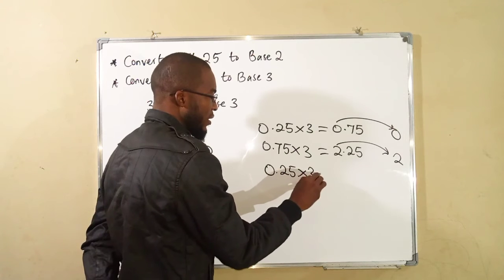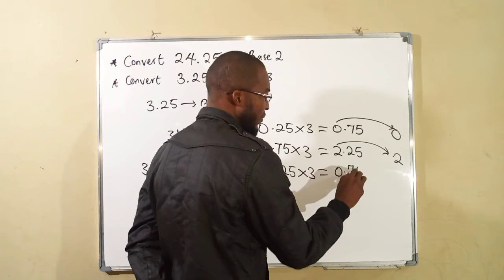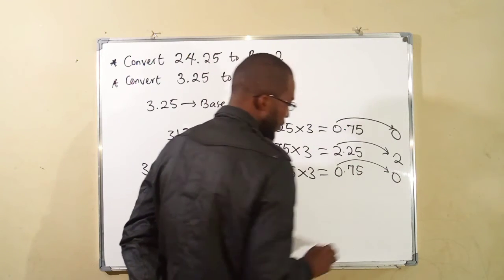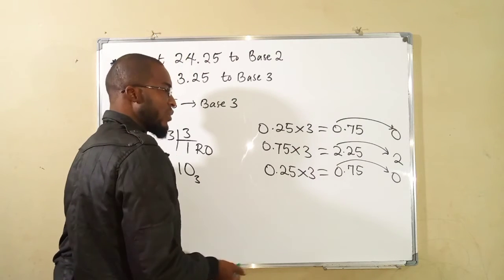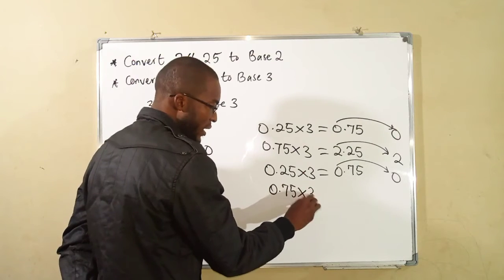Times it by 3, you will get 0.75. Take away the whole number, 0. Taking away that whole number, you will be left with 0.75. Times it by 3 again.